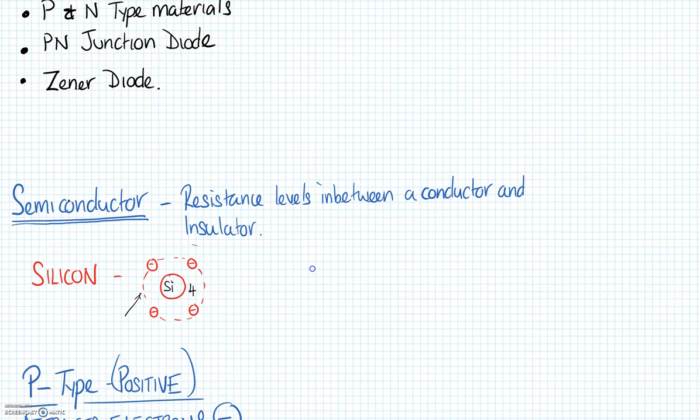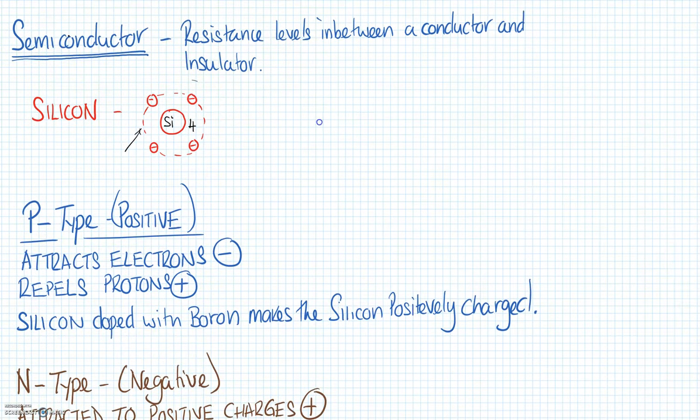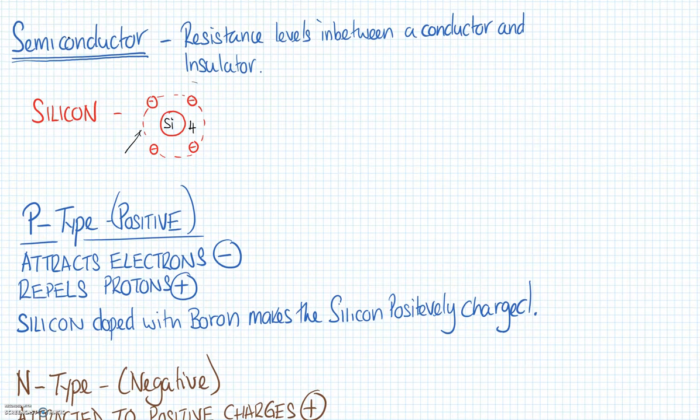So we'll start off talking about the semiconductor. A semiconductor is generally silicon or germanium. Silicon is a bit more stable, and silicon basically has four electrons in its outer shell. The resistance levels of a semiconductor are in between a conductor and insulator, so it's kind of set in the middle.